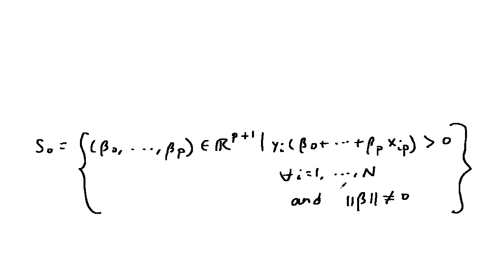S should actually be the set s0 given by the set of vectors beta 0 through beta p in R^(p+1), such that the hyperplane separates the points.